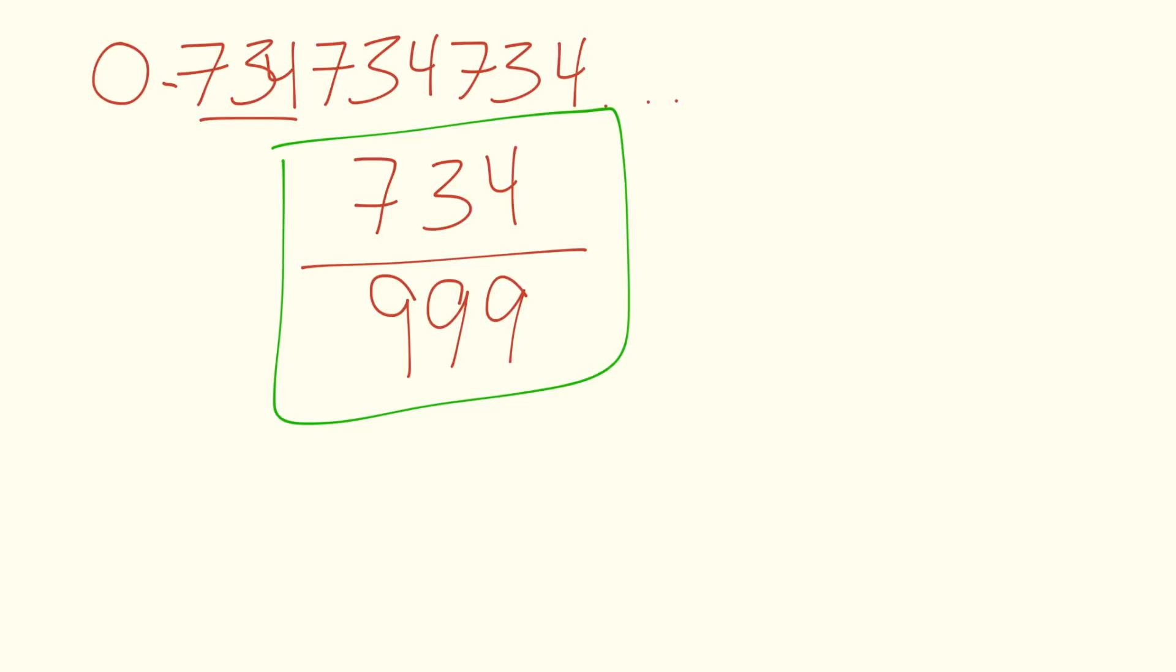As another example let's look at 0.646464. How do you write that? Well it's 64 over 99. Two nines for two digits. And that's how you convert repeating decimals into fractions.